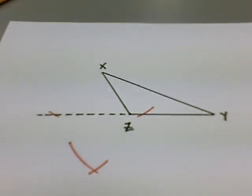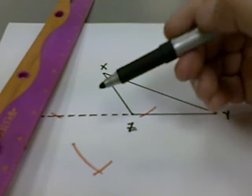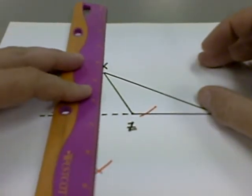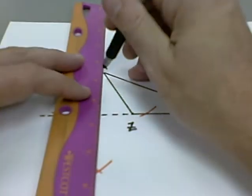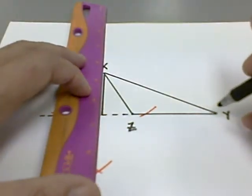And now what we'll do is we will connect our point X, which is our vertex, with the intersection point down below. And we'll have a perpendicular from X to the side YZ.